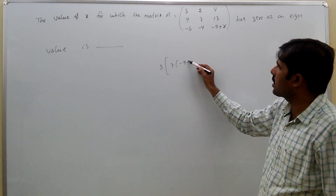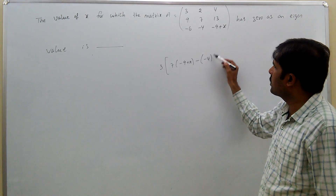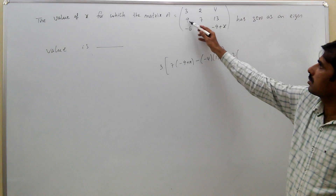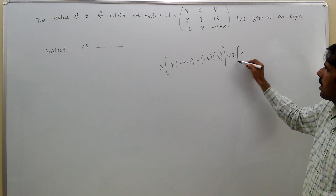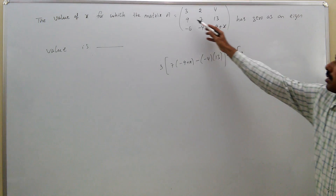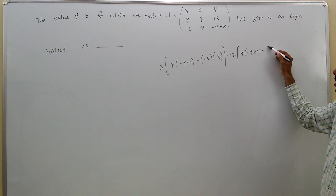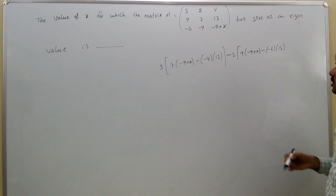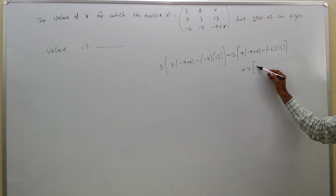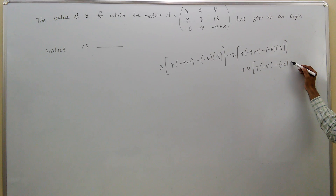That means: 3 into [7 into (minus 9 plus X) minus 13 into minus 4] plus 2 into [minus 2 into (minus 9 plus X) minus minus 6 into 13] plus 4 into [9 into minus 4 minus minus 6 into 7].